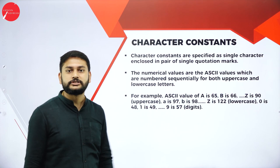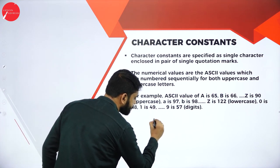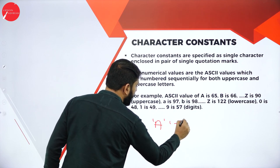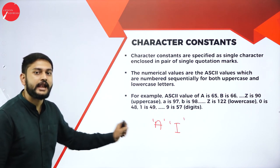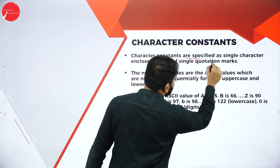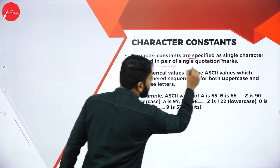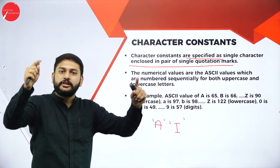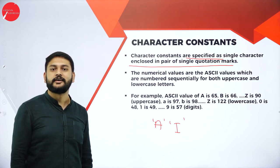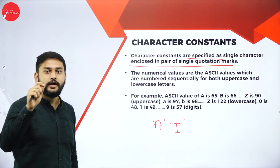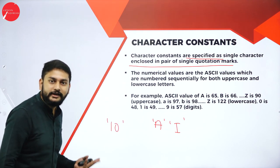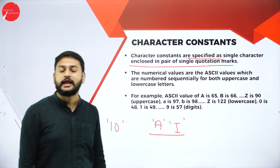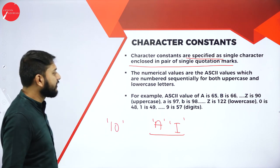The next type is the character constant. A character constant is a single character enclosed in a pair of single quotation marks. Only alphabets can be written as character constants — you cannot write a number like this. For example, a single letter enclosed in single quotes represents a character constant.